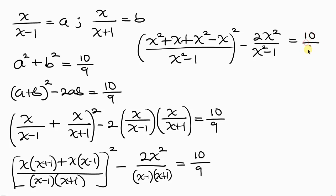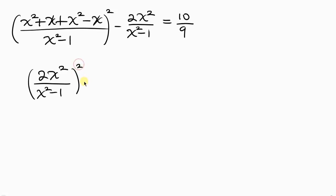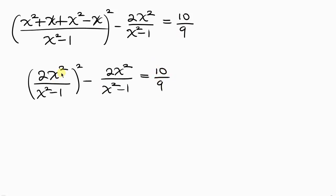Simplifying further, x and -x cancel, leaving x² + x² = 2x² in the numerator. So we have (2x²/(x²-1))² minus 2x²/(x²-1) = 10/9.